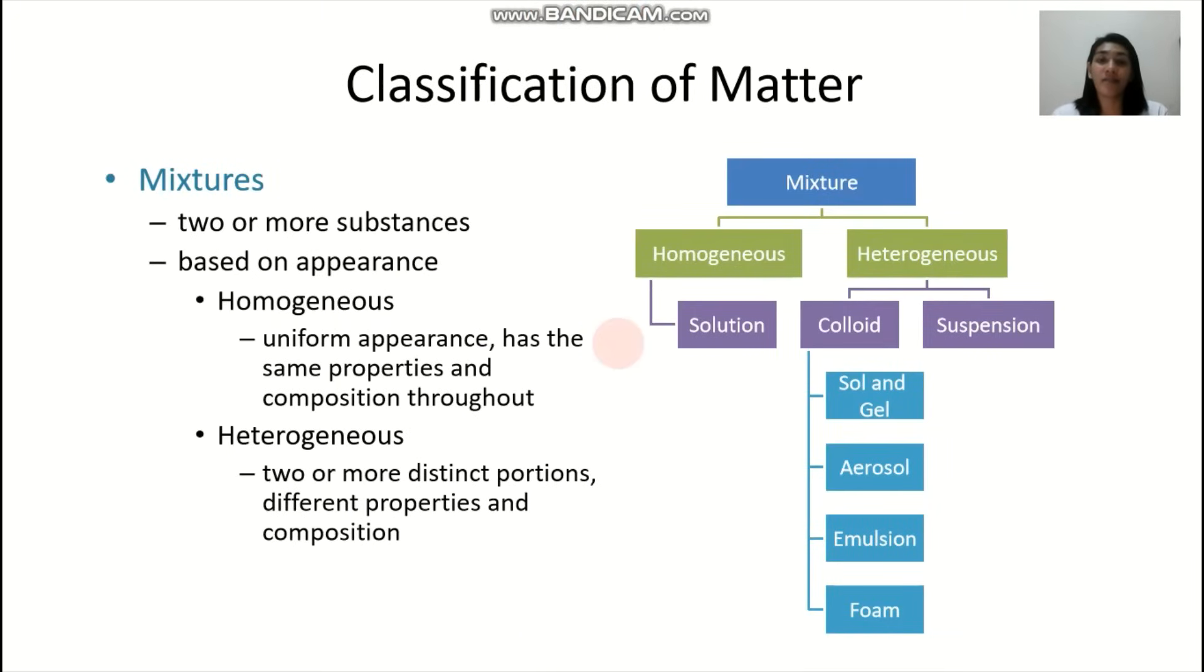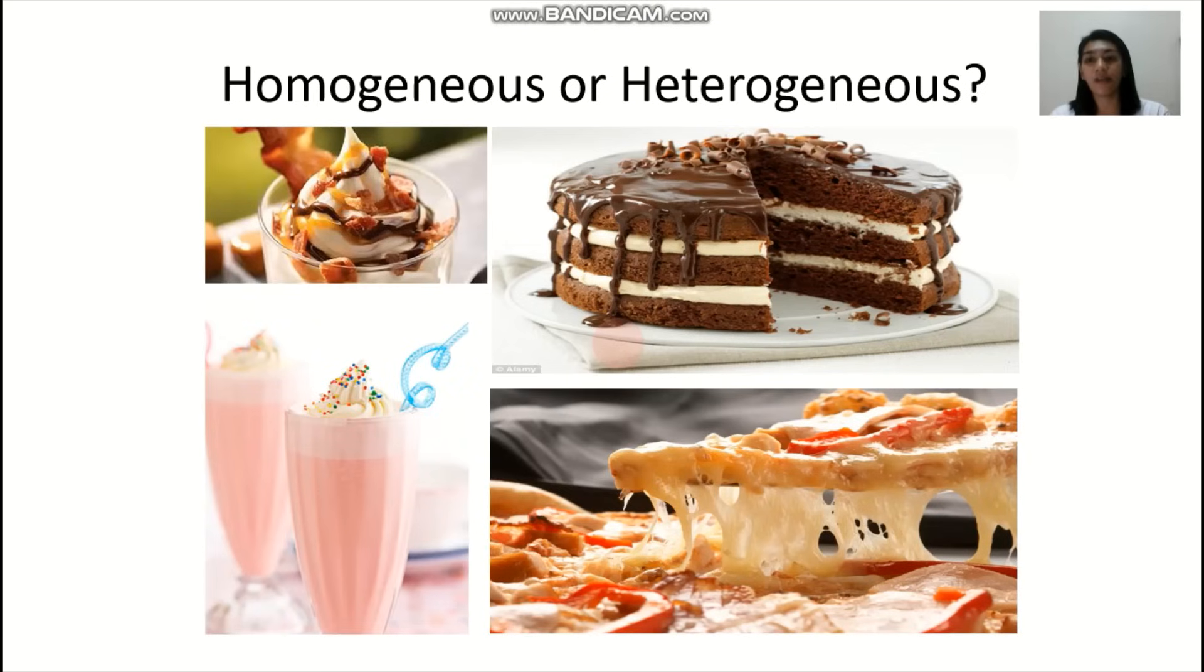Now, let's go to the second classification of matter which are your mixtures. Mixtures are actually composed of two or more substances. According to appearance, you have the homogeneous and the heterogeneous mixture. Homogeneous, they have uniform appearance. While for heterogeneous, you have two or more distinct portions. They have different properties and composition.